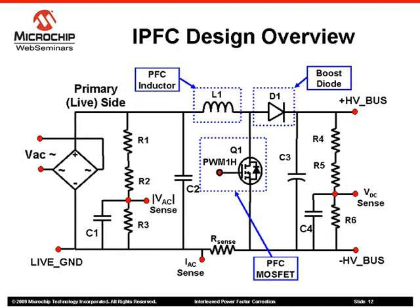The boost converter's operation is based on the energy stored in inductance L1. When transistor Q1 is on, the current through the inductance rises and fly-back diode D1 stops conduction. As soon as Q1 opens, the only path for the inductor current is through diode D1, output capacitor C3, and the load. D1 closes and starts conducting since the voltage on its anode is higher than the rectified AC source voltage. The voltage across L1 reverses sign to maintain current flow, transferring both the AC source energy and the energy stored in the inductor to the load and output capacitor through diode D1.